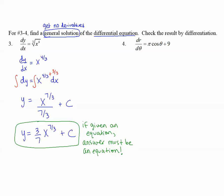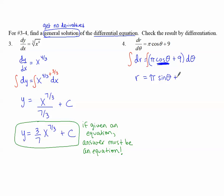For number 4, dr/dθ equals π cosine θ plus 9. Multiplying both sides by dθ gives dr equals (π cosine θ plus 9) dθ. Taking the anti-derivative of both sides: the left side leaves r, and on the right, π is a constant multiple of the anti-derivative of cosine θ, which is sine θ. The anti-derivative of 9 is 9θ. The general solution is r equals π sine θ plus 9θ plus c.